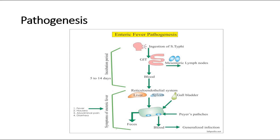For the pathogenesis of typhoid fever, first the patient accidentally ingests Salmonella typhi bacteria from a contaminated source. These bacteria are able to avoid phagocytosis by neutrophils. They also have fimbriae to adhere to Peyer's patches, and then they infect the macrophages in the Peyer's patches and replicate within them. Salmonella is then carried to the lymphatic and reticuloendothelial system.